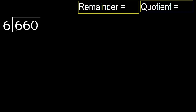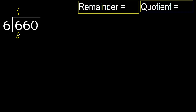660 divided by 6. 6 is not less; 6 multiplied by which number is nearest to 6 but not greater? 6 multiplied by 2 is 12, which is greater. Multiplied by 1 is 6, which is not greater.